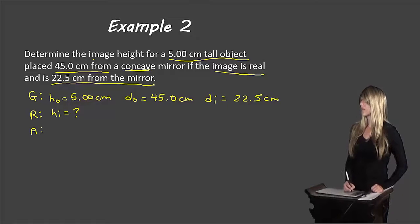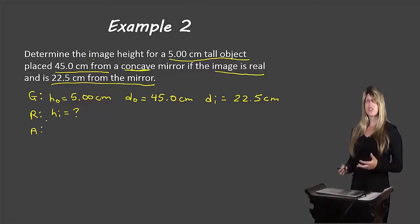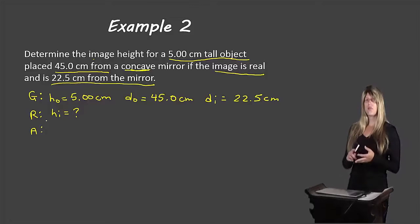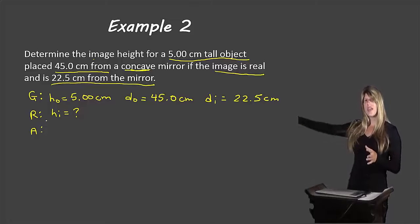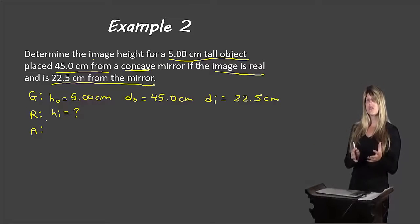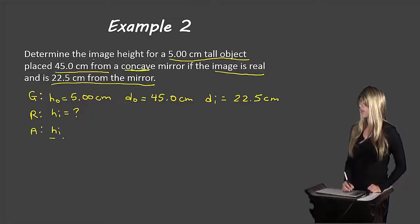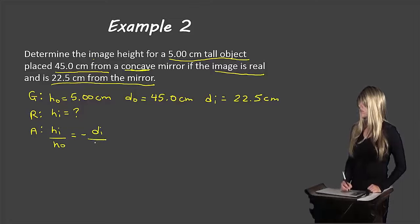Let's analyze which piece of the equation to use. We're given information about heights and distances, and we need information about heights — nothing about magnification. So we'll cut out that piece of the equation and use the piece about heights and distances: HI over HO equals negative DI over DO.